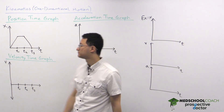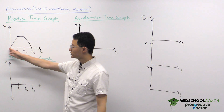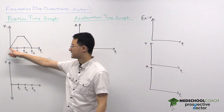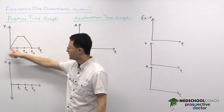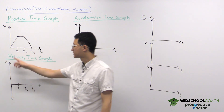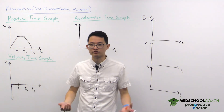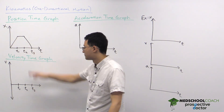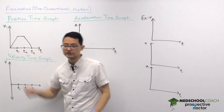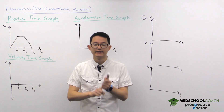First, if we want to read this graph, we can note that this is motion at different points in time. From 0 to T1, the object moved in the positive direction. From T1 to T2, the position did not change — the object either didn't move or maybe spun in circles. From T2 to T3, the object moved in the negative direction, back to its original starting position.